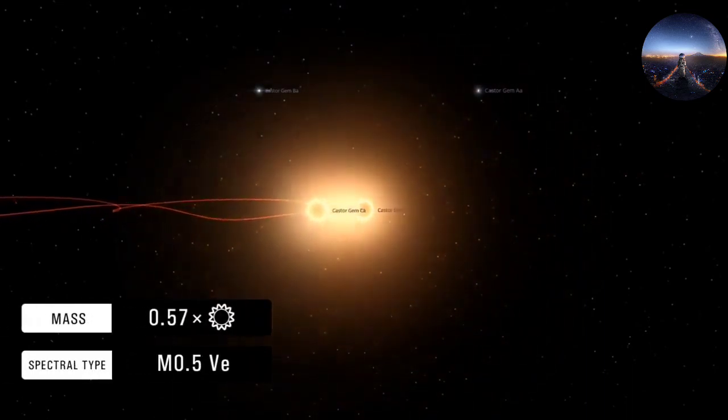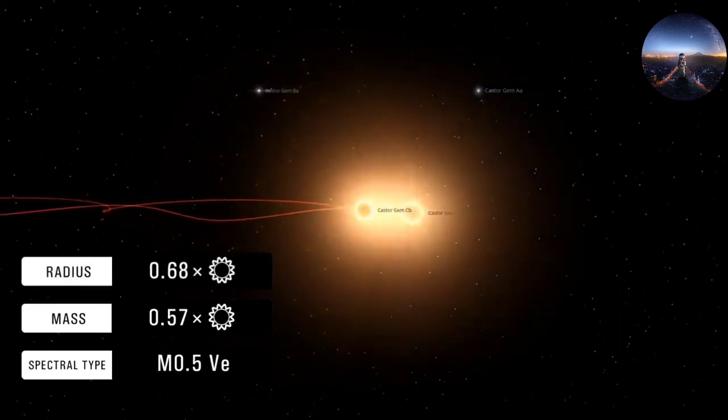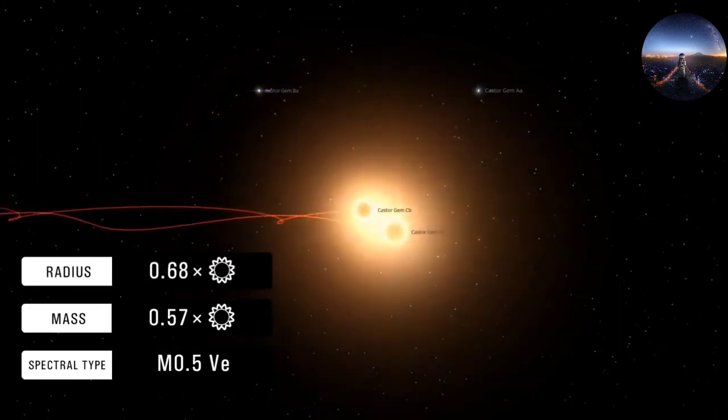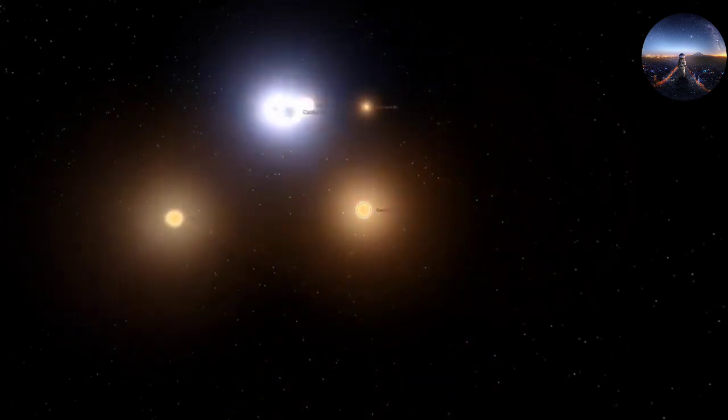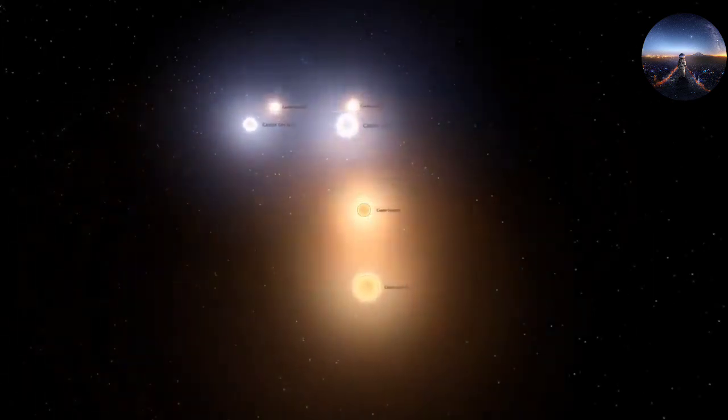The paper, TIC 168789840: A Sextuple Eclipsing Sextuple Star System, has been accepted by the Astronomical Journal. A preprint version is available online.